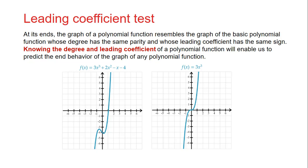Knowing the degree and leading coefficient of a polynomial function allows us to predict the end behavior of any polynomial graph. For example, f of x equals 3x cubed plus 2x squared minus x minus 4 and f of x equals 3x squared both start in the third quadrant and end in the first quadrant — going down to the left and up to the right — because of the leading term 3x cubed, which has an odd degree and a positive leading coefficient. This is the leading coefficient test.